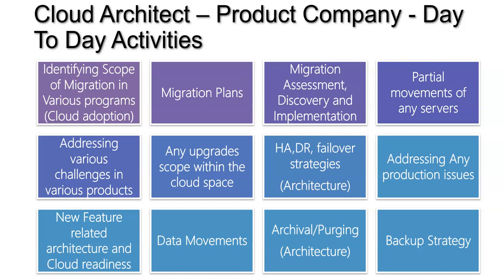Every migration activity will contain at a minimum: evaluation, architecture, cost comparison, documentation, and presentation — 80 percent of these activities necessarily contain all of the above. Migration assessment, discovery, and implementation: any identified and planned migration activity will have assessment, discovery, and execution. Partial movement is also possible — for example, only the database server needs to move to the cloud while the application middleware stays on-premises, or only the front-end application moves.